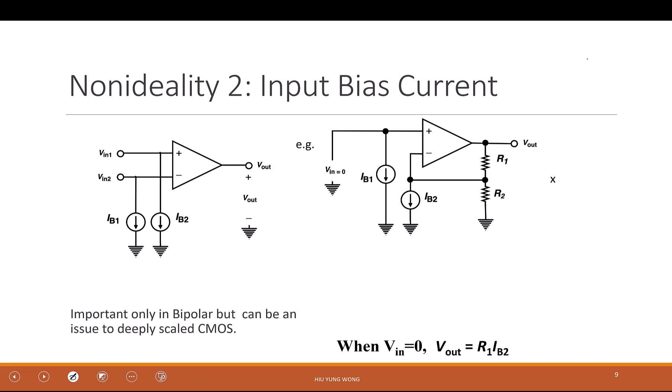Let's talk about input bias current. This is becoming more important when we go to MOSFET — the metal oxide semiconductor — where the gate has very large, ideally infinite input impedance. It was a big problem in BJT times because the base has a large current. But nowadays the gate oxide becomes thinner and thinner, so there is leakage again. We keep saying the input impedance is supposed to be infinity, so no current goes into the gate.